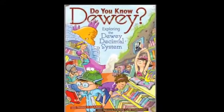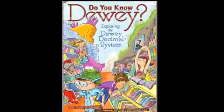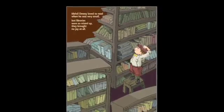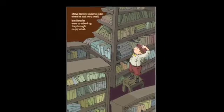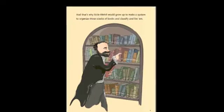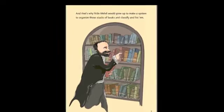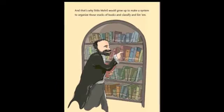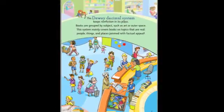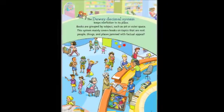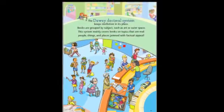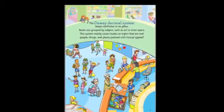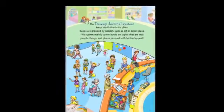Do You Know Dewey? Exploring the Dewey Decimal System. Melville Dewey loved to read when he was very small, but libraries were so mixed up they brought no joy at all. And that's why little Melville would grow up to make a system to organize those stacks of books and classify and list them. The Dewey Decimal System keeps nonfiction in its place. Books are grouped by subjects such as art or outer space. This system mainly covers books on topics that are real — people, things, and places.